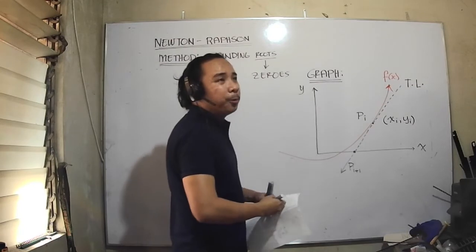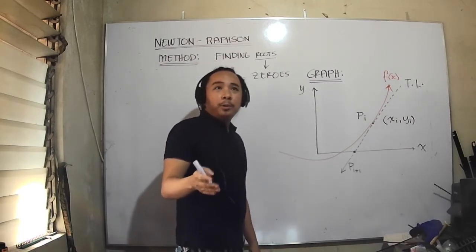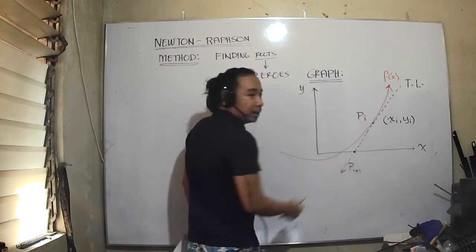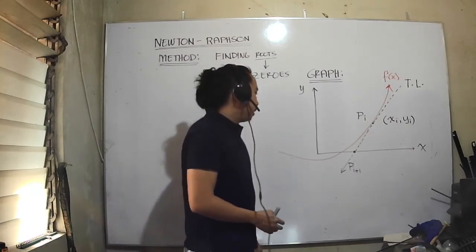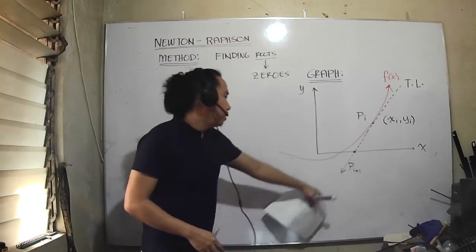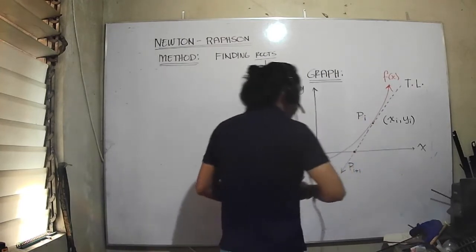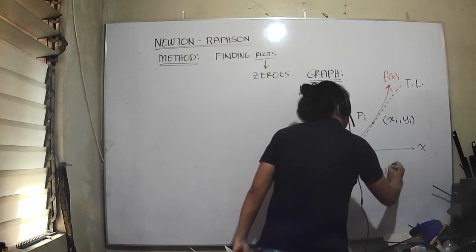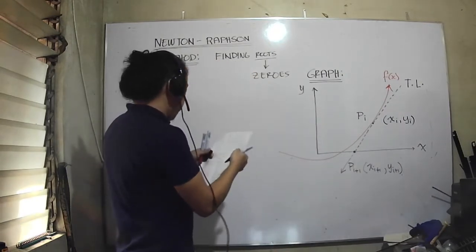If you study other topics in numerical methods, you'll hear a lot about forward or backward steps. For this, I'm assuming the step is forward, that is why I'm using plus one. This is just for representation. You will find different notations in books - it could be n, i, or m. The coordinates will be x i+1 and y i+1.